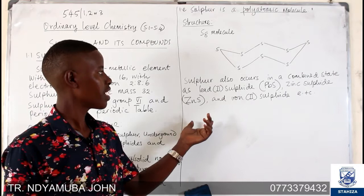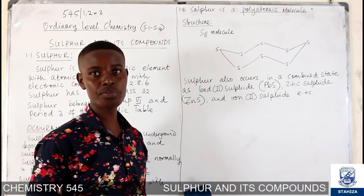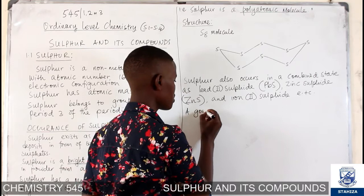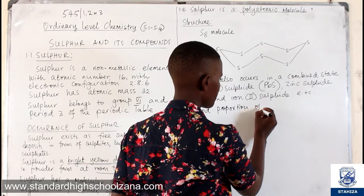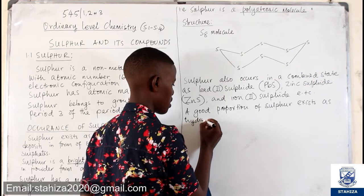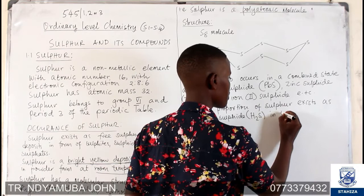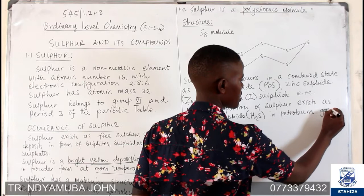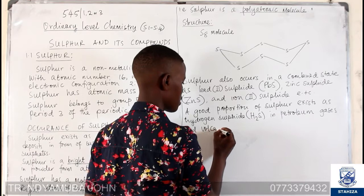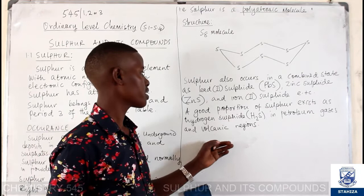We are talking about the occurrence of sulfur as an element. We can find it in the earth in a combined state, and it can also be found in underground deposits. A good proportion of sulfur exists as hydrogen sulfide, in petroleum gases, and in volcanic regions. In volcanic regions, you are going to find a higher proportion of sulfur.